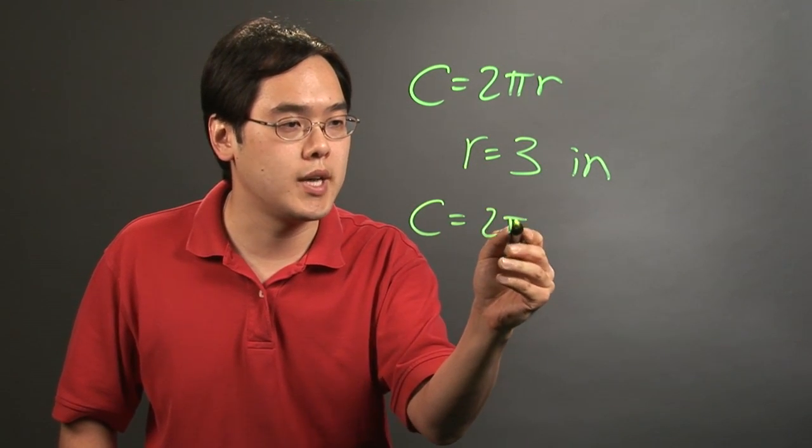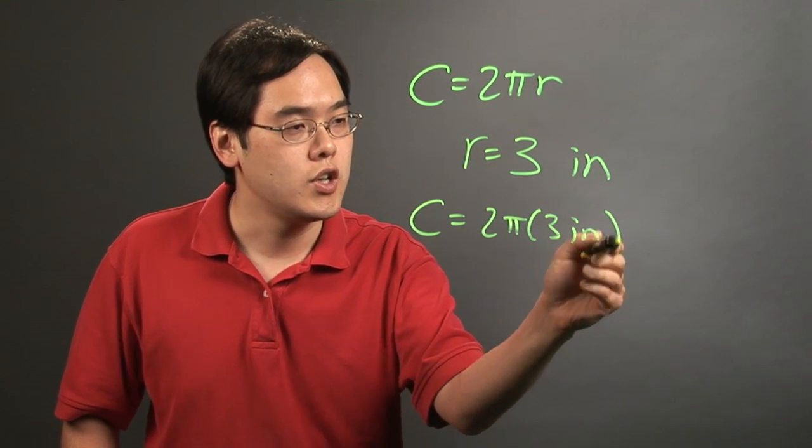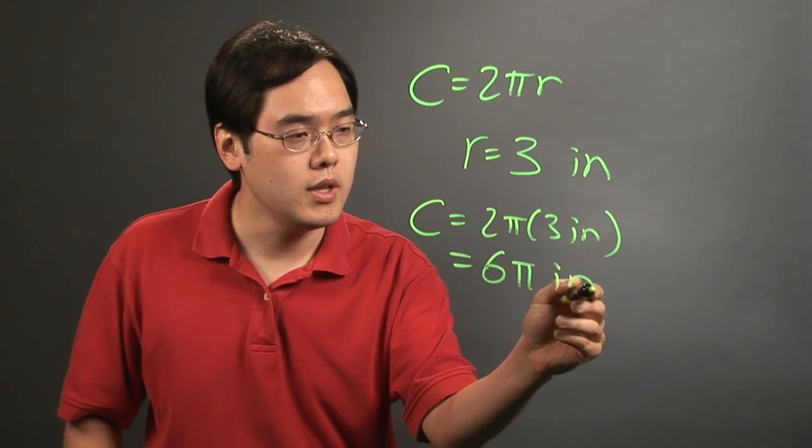So circumference equals 2π times 3 inches, so that's going to give you 6π inches.